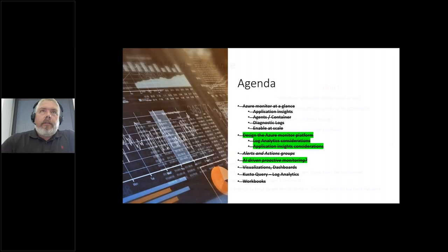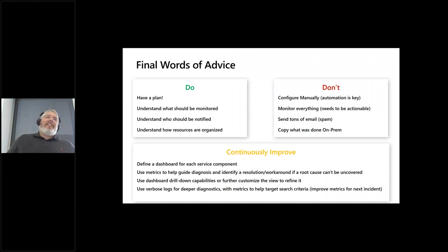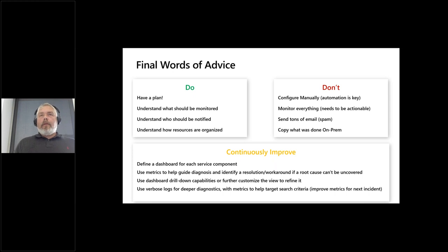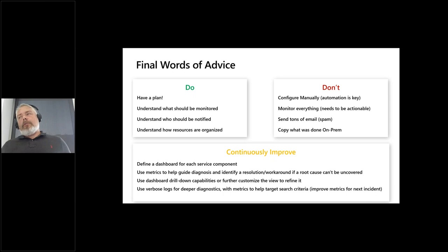We've covered all of the agenda. Final words of advice: have a plan with your monitoring, understand what you should monitor, understand who should be notified, and understand how resources are organized — including regional considerations and audit or compliance requirements. What you don't do is configure it manually. Don't monitor everything — if you do, you'll just get swamped and won't get any value. Don't send tons of email. Do not copy what you already have on-prem. You need to continuously improve to have something working for you.